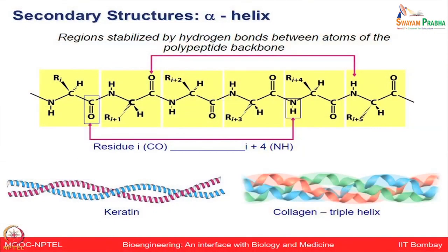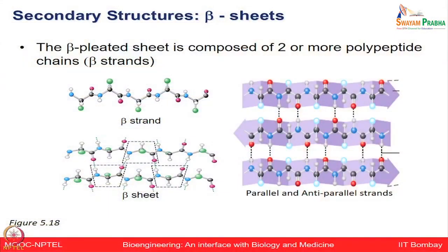Proteins have variable helix content. The alpha helix is a rod-like structure where the main chain is tightly coiled around the helical axis and the side chains extend outwards away from the helical axis. Specific hydrogen bonds stabilize these helical coils. The alpha helix is formed in regions stabilized by hydrogen bonds between the carboxyl group of the first amino acid and the NH group of the fourth residue. Similar alpha helix structures can be seen in keratin and collagen — including double helix and triple helix forms — which provide a great deal of strength to these protein structures.